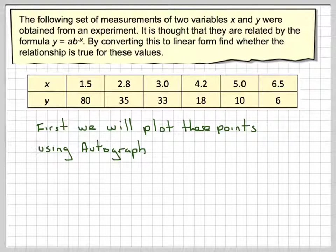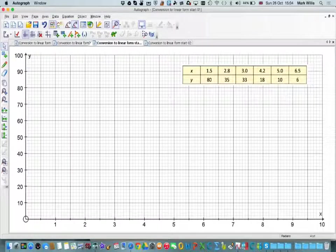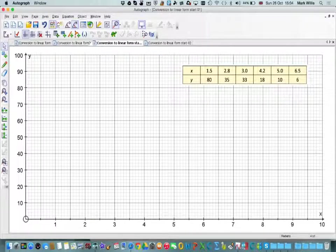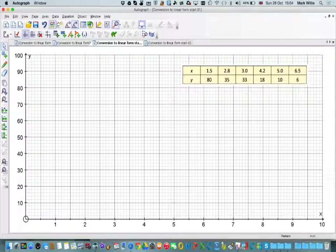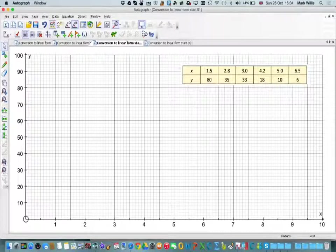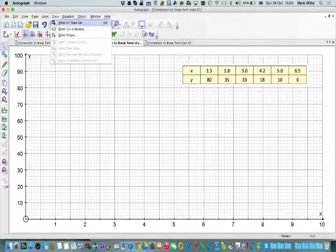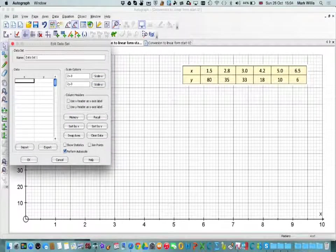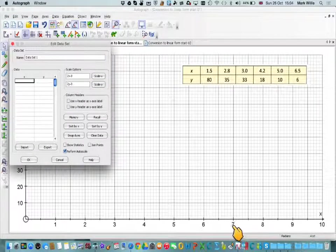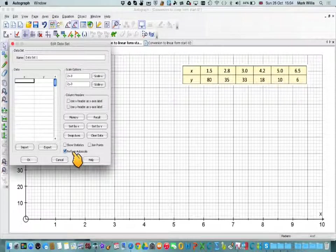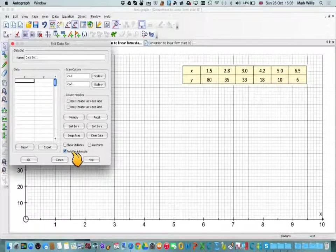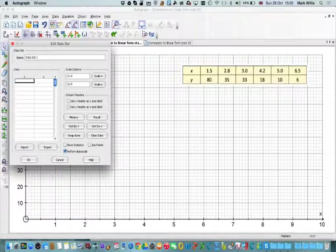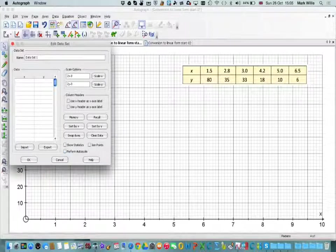This is an experimental method so the results might not come out to be the same. Going to Autograph, here I've already set up the x-axis and the y-axis and here is the data from the question. You need to go to Data and Enter XY Dataset. Now, if you don't want it to change the scale of the axis, then this button here you need to uncheck. If you just start out with a standard Autograph page, it will automatically form the scale. But I've made some nice graph paper already so I'm just going to uncheck that.